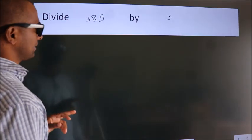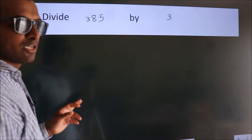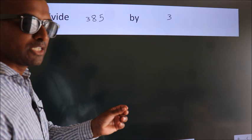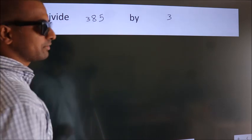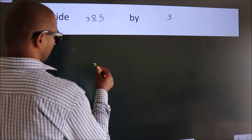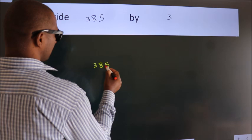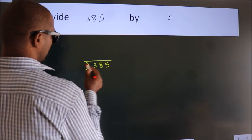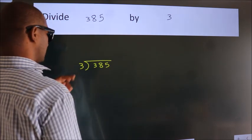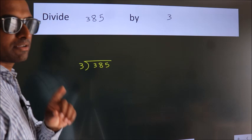Divide 385 by 3. To do this division, we should frame it in this way. 385 here, 3 here. This is your step 1.